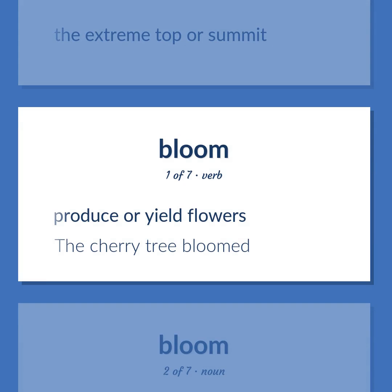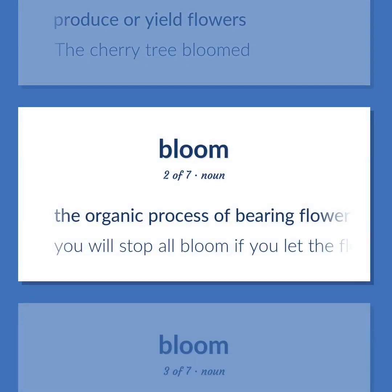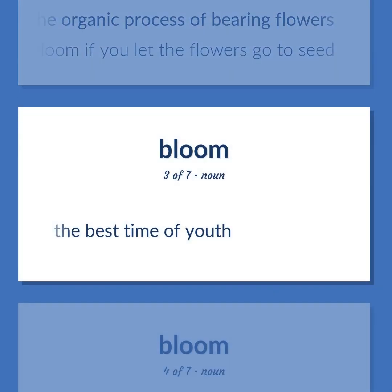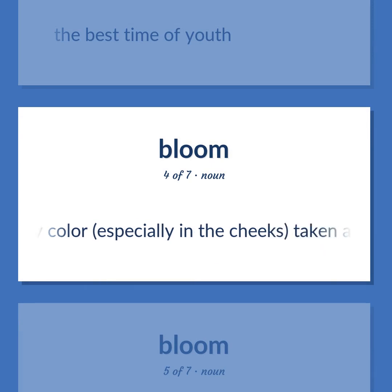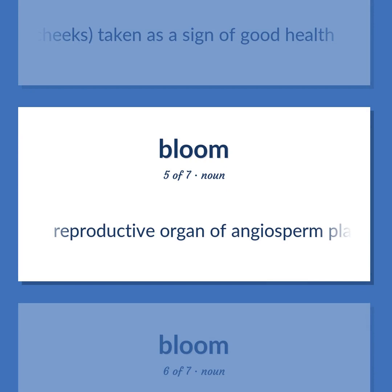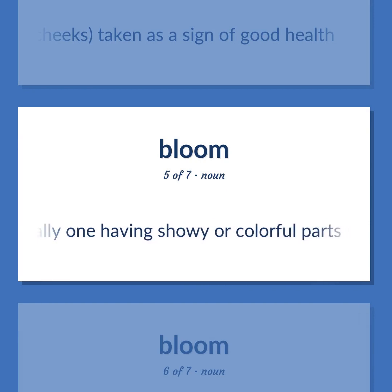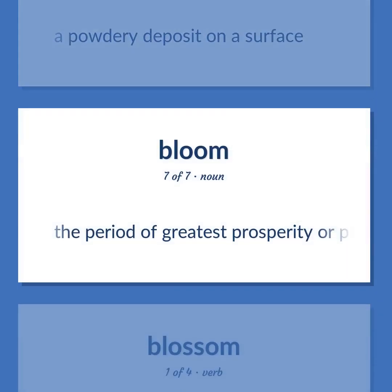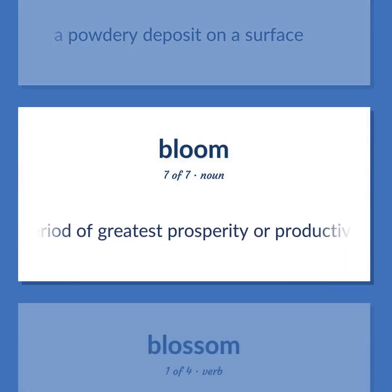Bloom: Produce or yield flowers — the cherry tree bloomed. The organic process of bearing flowers — you will stop all bloom if you let the flowers go to seed. The best time of youth. A rosy color, especially in the cheeks, taken as a sign of good health. Reproductive organ of angiosperm plants, especially one having showy or colorful parts. A powdery deposit on a surface. The period of greatest prosperity or productivity.